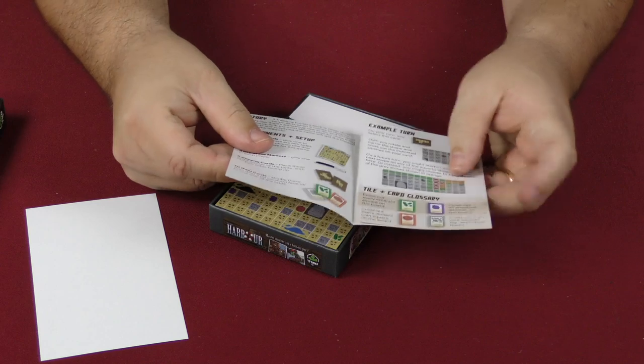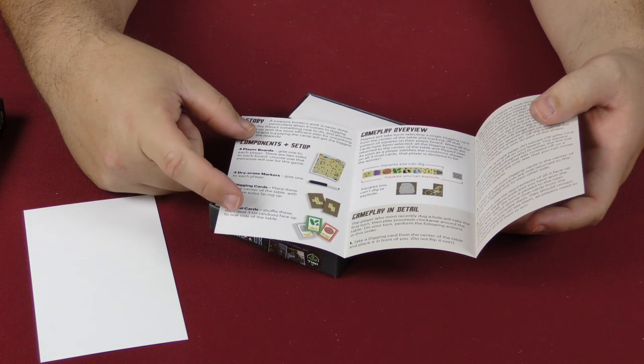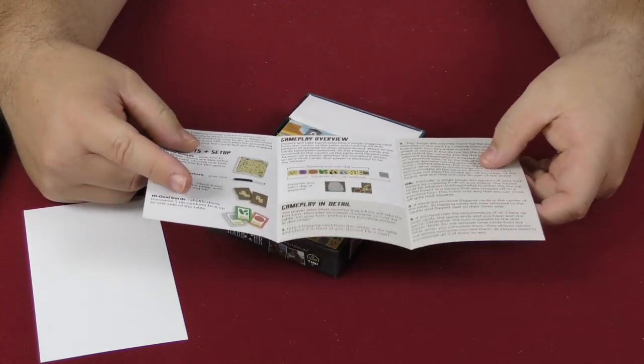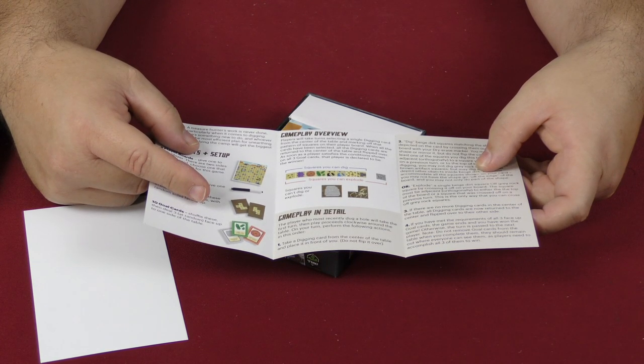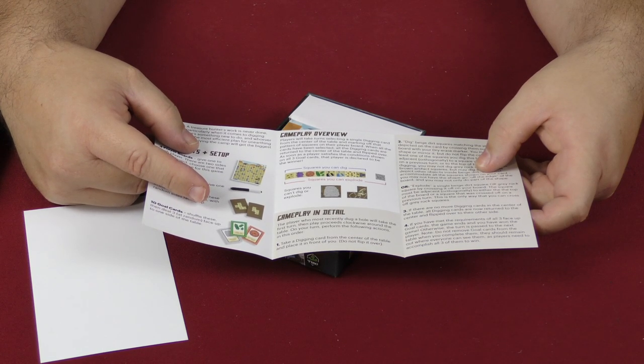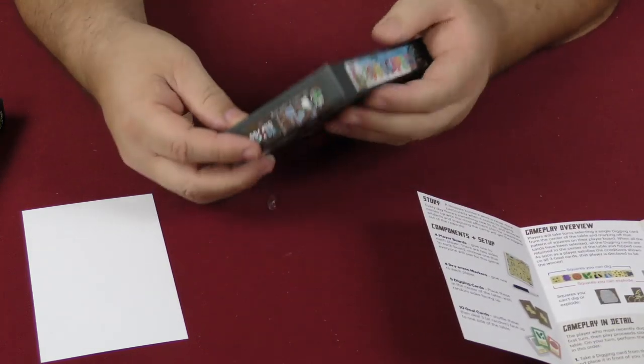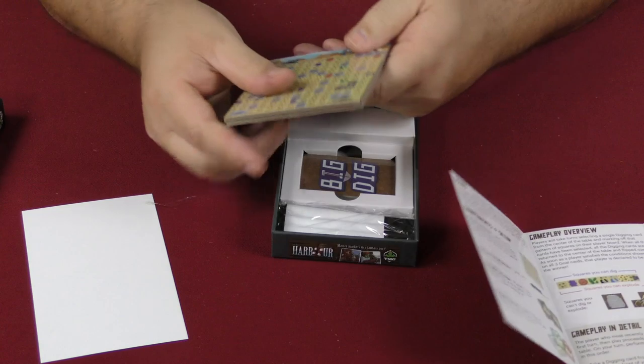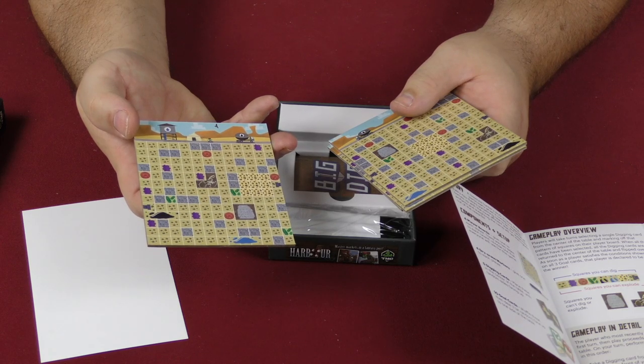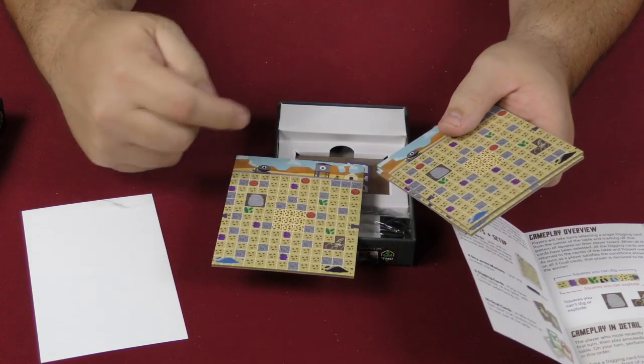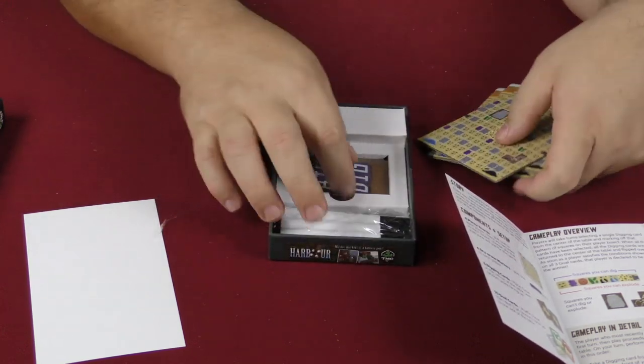Wow, here's the rule book. It looks like you have dry erase markers, digging cards, and then goal cards. Players will take turns selecting a single digging card from the center of the table and marking off their pattern of squares on their board. These are how you mark off different patterns, and your board will have different patterns on it to determine what gems you get. You start up here at the top and work your way down, and whoever gains the most points efficiently is the winner.